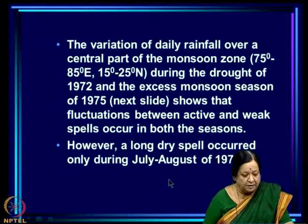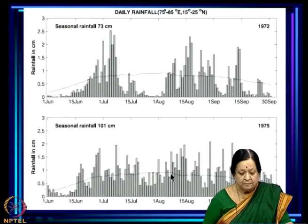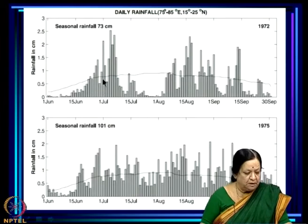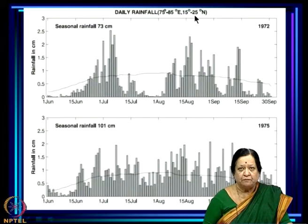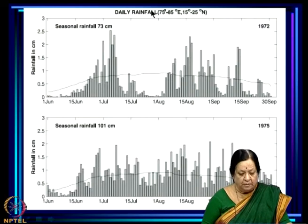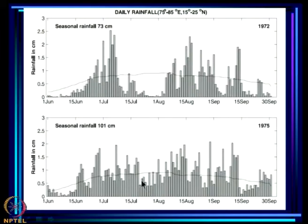The variation of daily rainfall over a central part of the monsoon zone — 75 to 85 degrees east and 15 to 25 degrees north — during the drought of 1972 and excess monsoon season of 1975 was first shown by Krishnamurti and Balmep. Again, you can see active spells and weak spells. In 1975 they are just active and weak spells with no long intense weak spells, but in 1972 we have active spells and in addition an intense dry spell — this is a break.